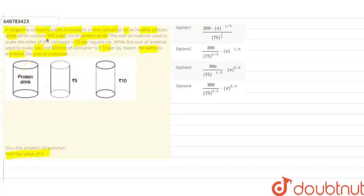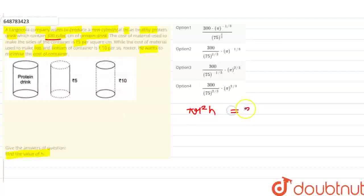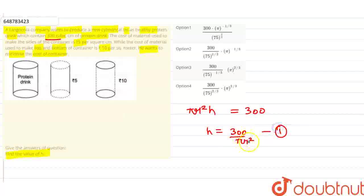We know that the volume of a cylinder is V = πr²h, where r is the radius, h is the height, and the volume equals 300. So we get h = 300 / (πr²) — this is equation number 1, which we will use to substitute the h value later.